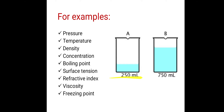Suppose initially in this beaker there is 250 ml of water. Now if we add again 500 ml of water into beaker A, so total it will become 750 ml of water. If we consider the pressure of that 250 ml water, and when we add 500 ml of water into that beaker, it becomes 750 ml — but the pressure of that water remains the same.